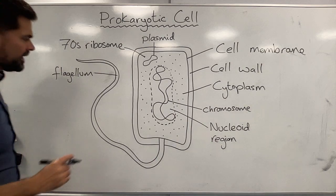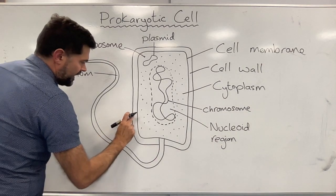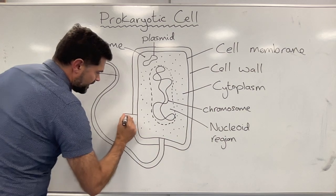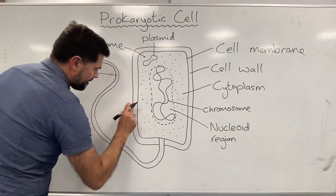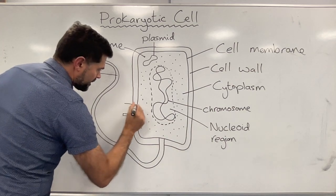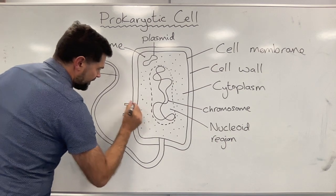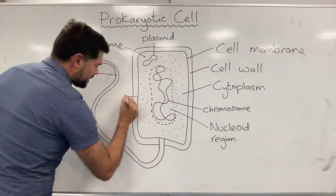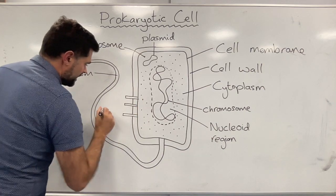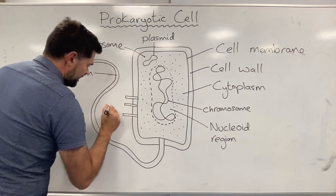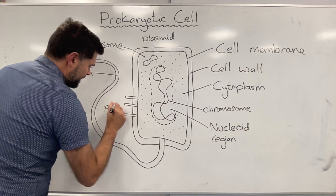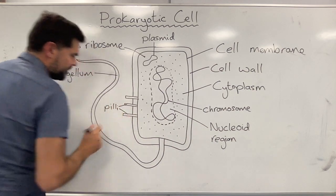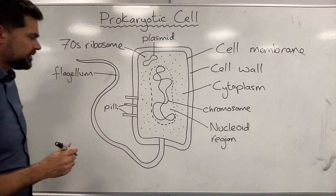Other structures that bacteria might have are like little hairs like this. I'm only going to draw a few because it'll take me too long to draw them all. These are called pili. Pili is many of them; a single one would be a pilus.